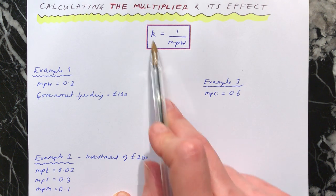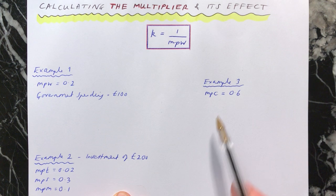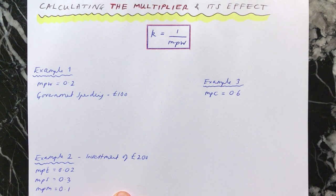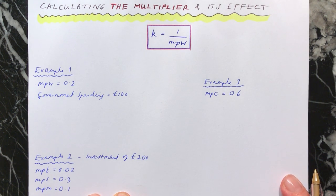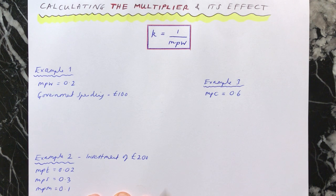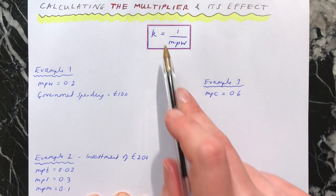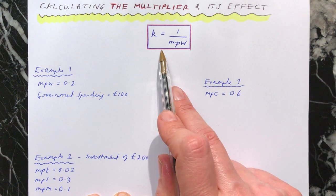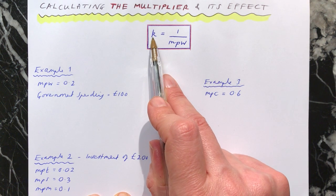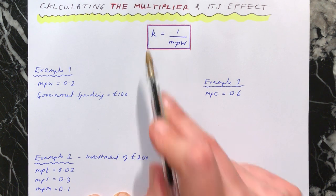I'm going to explain a bit about this and then we're going to go through three examples. I suggest you try and answer the questions — find out what the value of the multiplier is and what its effect is. So just to break this formula down: we know that k is the multiplier, that's shorthand for it.